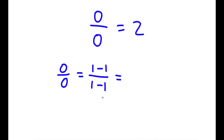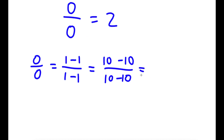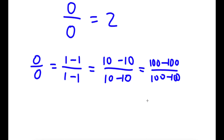Now 1 minus 1 over 1 minus 1 is the same thing as 10 minus 10 over 10 minus 10. Again, 10 minus 10 is 0, so I have 0 over 0 again. And 10 minus 10 over 10 minus 10 is the same thing as 100 minus 100 over 100 minus 100. Again, 100 minus 100 is 0, so it's the same thing.